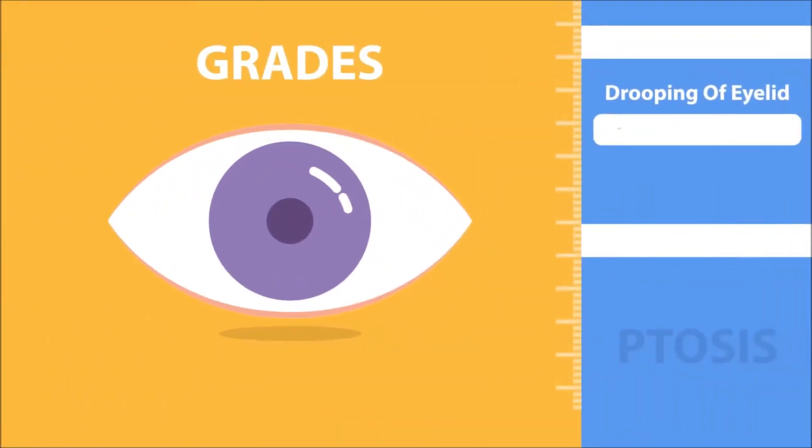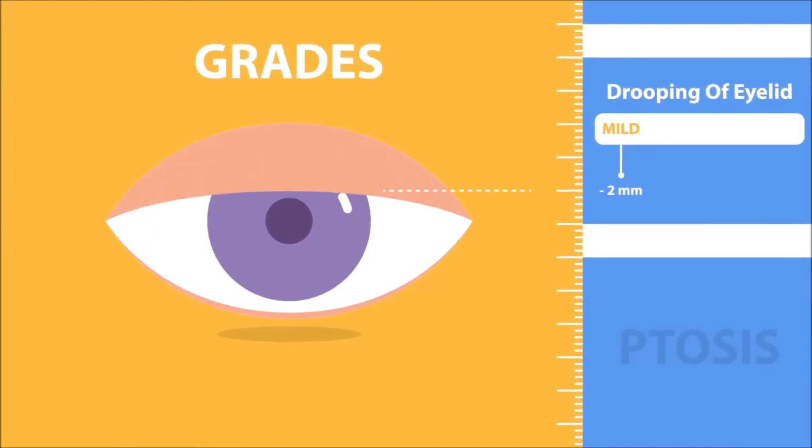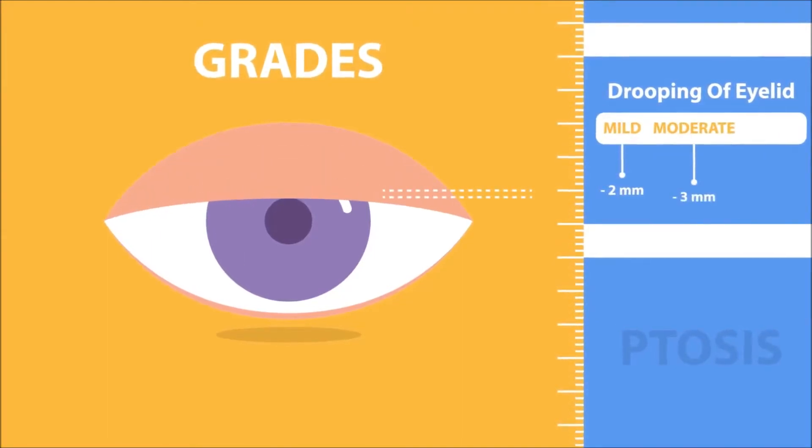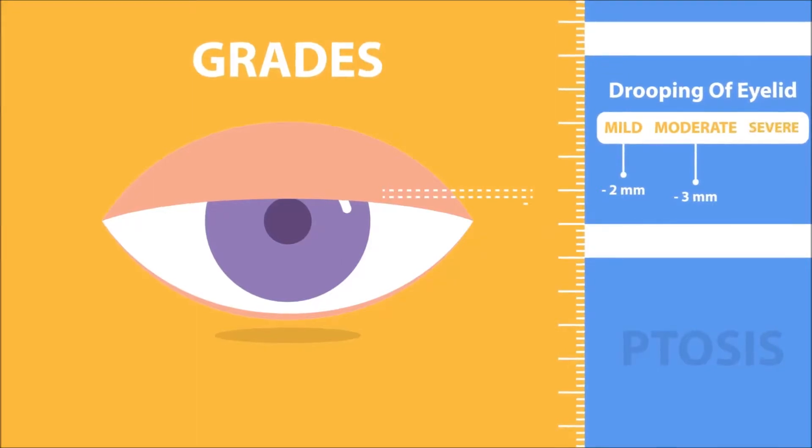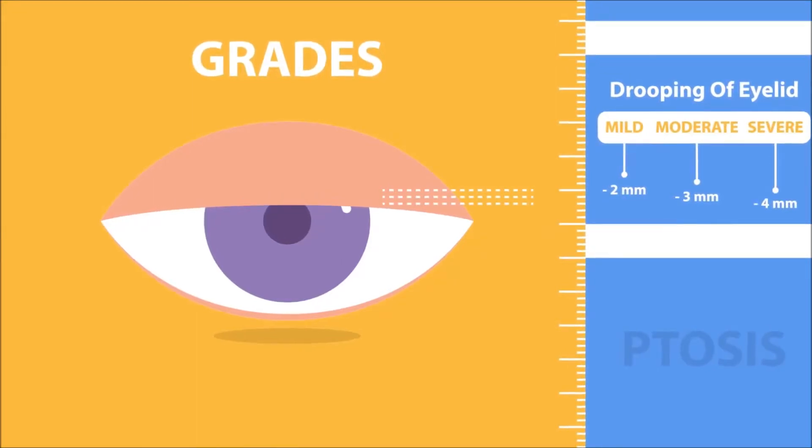Ptosis could be mild, up to two millimeter drooping of eyelid; moderate, up to three millimeter drooping of eyelid; or severe, four millimeter or more drooping of eyelid, depending upon the amount of ptosis present.